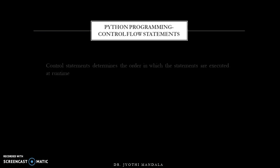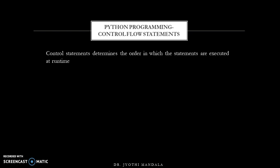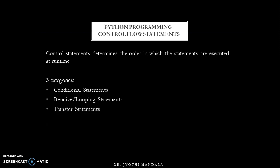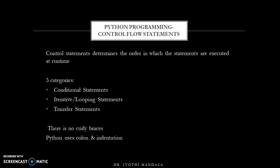Control flow statements determine the order in which the statements are to be executed at run time. We have three categories of control statements: conditional statements, iterative which are called looping statements, and transfer statements. Unlike other programming languages where we use curly braces to mention the block of control flow statements, in Python we use colon and indentation.